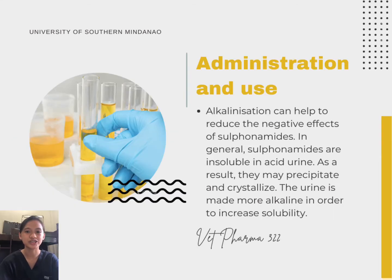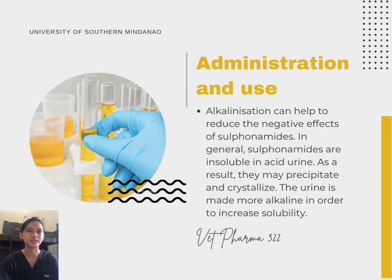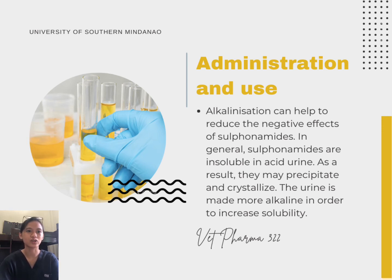In terms of administration and use, alkalinization can help to reduce the negative effects of sulfonamides. In general, sulfonamides are insoluble in acid urine. As a result, they may precipitate and crystallize. The urine is made more alkaline in order to increase solubility.